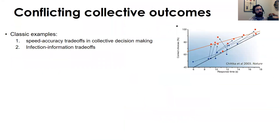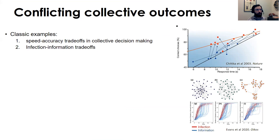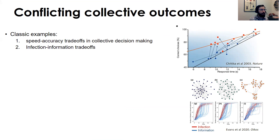Trade-offs in collective outcomes are not a new phenomenon. There's a well-known speed-accuracy trade-off in collective decision making, where groups can make rapid but inaccurate choices or slower choices with higher accuracy. There's also a classic infection-information trade-off, where pathogens and information can be transmitted among individuals simultaneously. A new paper by Evans et al. shows that the structure of the underlying social network can alter the relationship between those two outcomes.